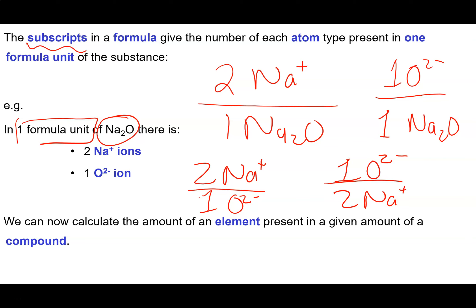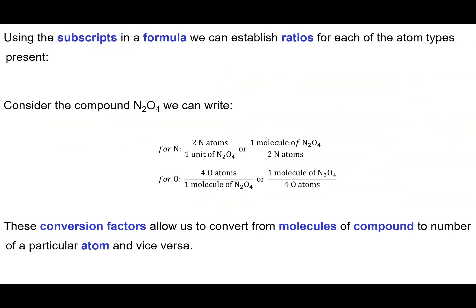Now we can calculate the amount of an element or ion that is present given its amount in a compound. If we have the amount of compound, we know how much of each element or ion is present as long as we have the formula. Using the subscripts in a formula, we establish ratios — we'll later call them mole ratios — of each of the atom or ion types that are present.